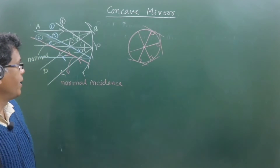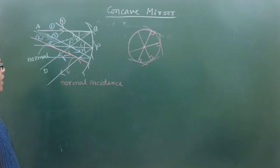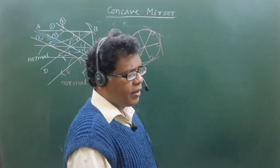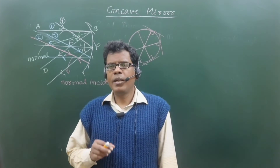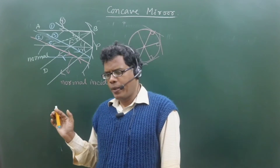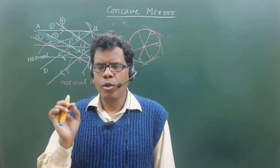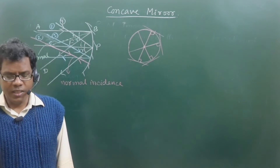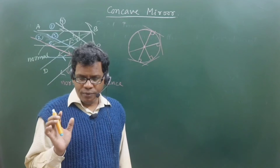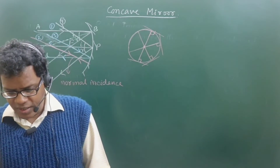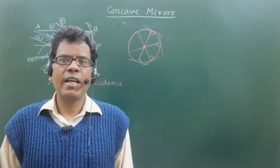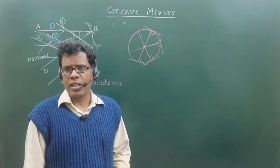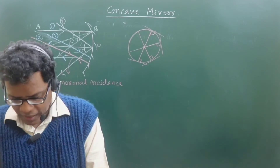In every case, keep in mind: to decide the position of the reflected ray from wherever you draw the incident ray — wherever the incident ray hits the mirror, join that point with the center of curvature, and that will be the normal at the point of incidence. Then you can see the angle of incidence, and accordingly decide the reflected ray position on the other side of the normal.